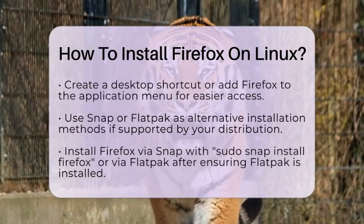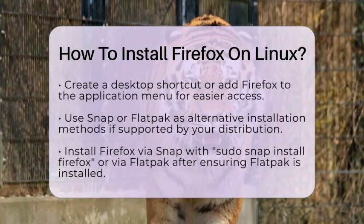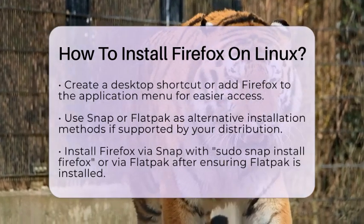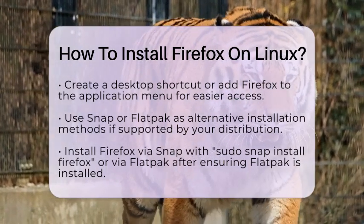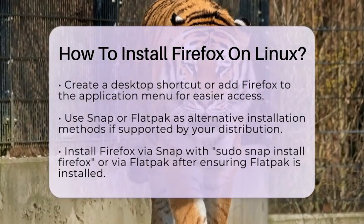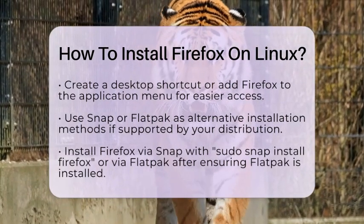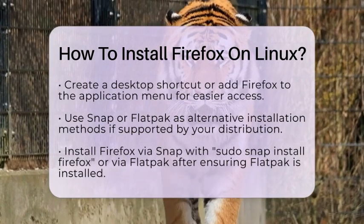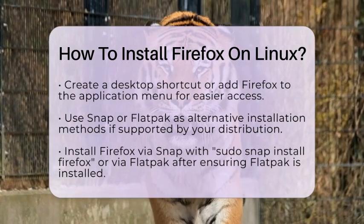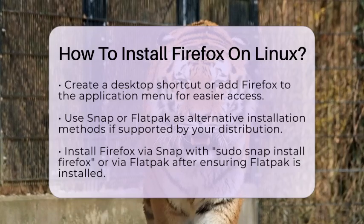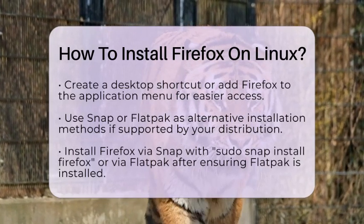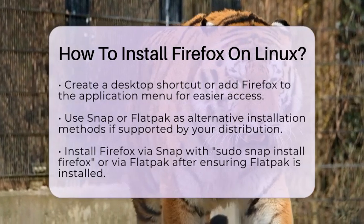Another option is to use Snap or Flatpak packages, which are containerized formats that include all necessary dependencies. If your distribution supports Snap, you can install Firefox by typing sudo snap install Firefox. For Flatpak, first ensure Flatpak is installed, then run flatpak install flathub org.mozilla.firefox. These methods can be convenient for easy updates and isolation from the rest of your system.